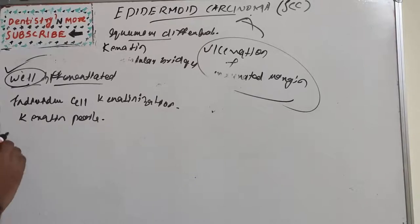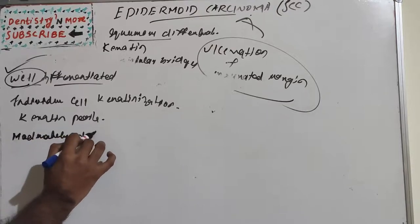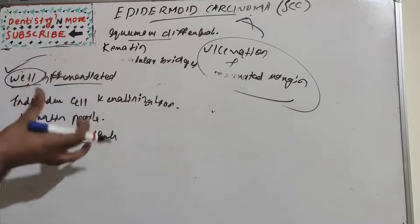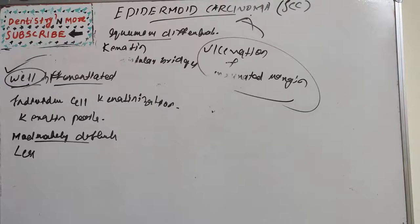The second type is moderately differentiated, where the tumor's resemblance to squamous epithelium is less pronounced. The characteristic shape of the cells may be altered, the growth rate is more rapid compared to well differentiated, greater numbers of mitotic figures are present, and the cells fail to form keratin.